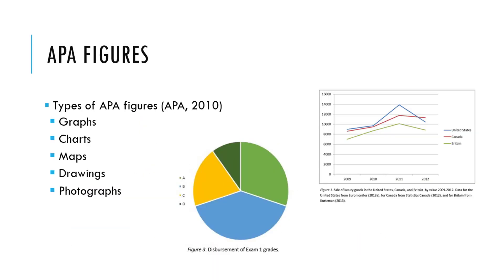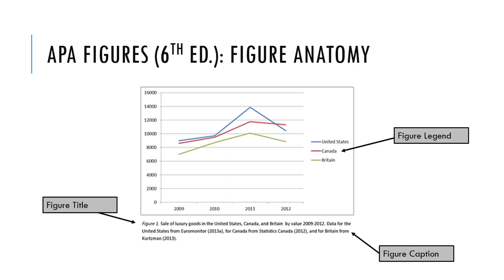In addition to tables, you can use figures to visually display information. The types of figures you may use to display results include graphs, charts, maps, drawings, and photos. When using figures, you need to include three main components: a figure title, caption, and legend.